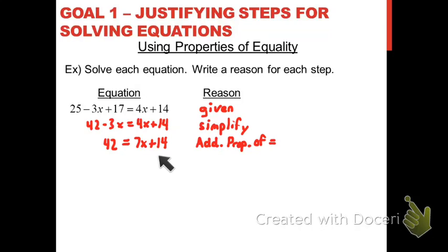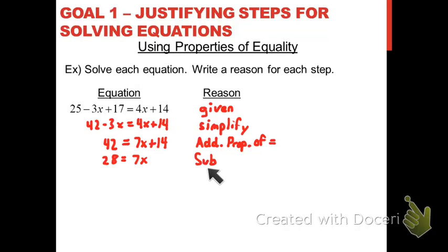The next thing is to get all constant terms away from the variable terms — we need to cancel out the 14 by subtracting 14 from both sides. That makes the next equation 28 equals 7x, and we use the subtraction property of equality. Don't abbreviate subtraction as 'SUB' because there's also the substitution property — use at least 'SUBT' to differentiate between subtraction and substitution.